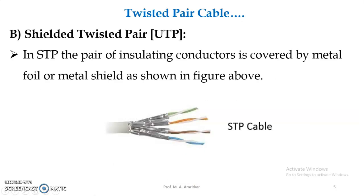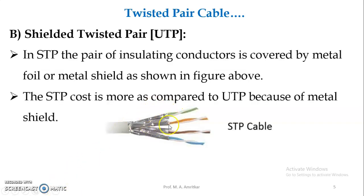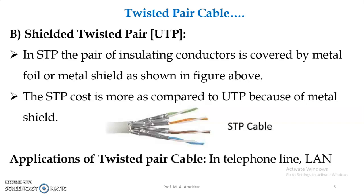Next, shielded twisted pair cable. In STP, the pair of insulating conductors is covered by metal foil or a metal shield, as shown in the figure. You can observe the metal shield given with the twisting of wires — that is why it is known as a shielded twisted pair cable. The STP cost is more compared to UTP because of the metal shield. Applications of twisted pair cables include telephone lines and LAN cables.